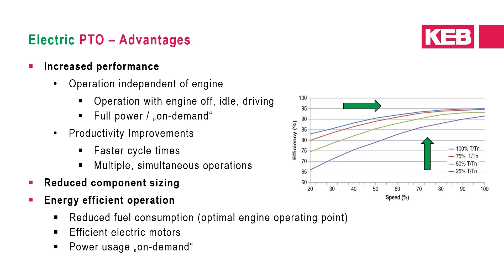Decoupling the auxiliary loads from the combustion engine can also allow for reduced engine size, or in some cases elimination of secondary engines for body equipment altogether. Eliminating auxiliary loads from the engine allows it to run at a more efficient operating point, reducing fuel consumption — which leads to the third benefit: energy efficient operation. Electric motors are generally 90 to 95 percent efficient at their operating point. Furthermore, EPTO can be operated on demand — when needed — eliminating excess standby power consumption such as bleeding off excess hydraulic circuit pressure when not in use.